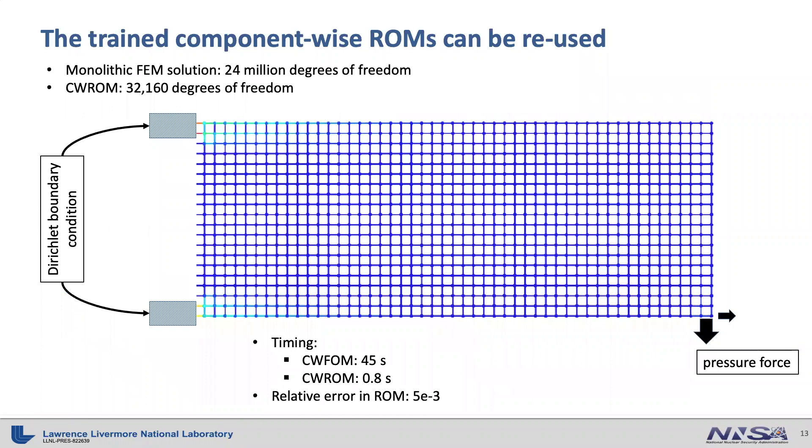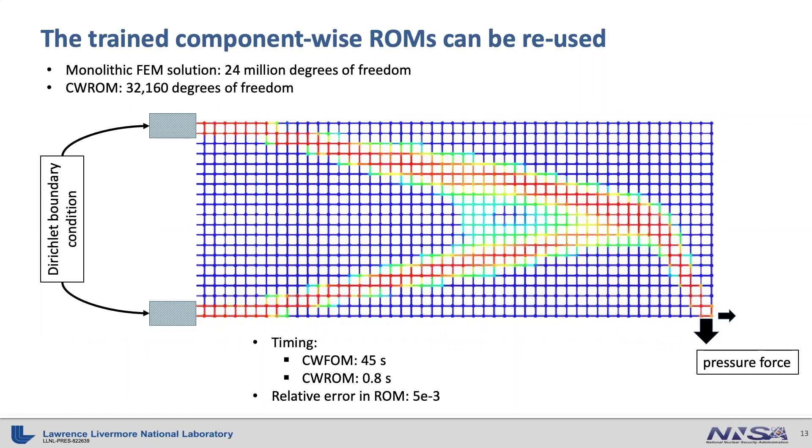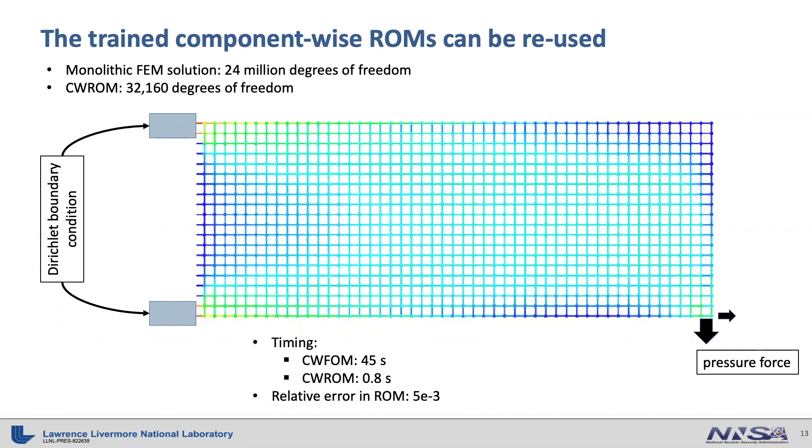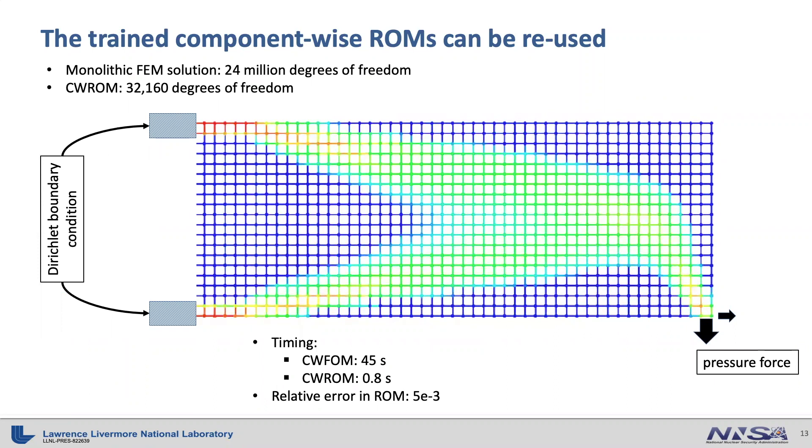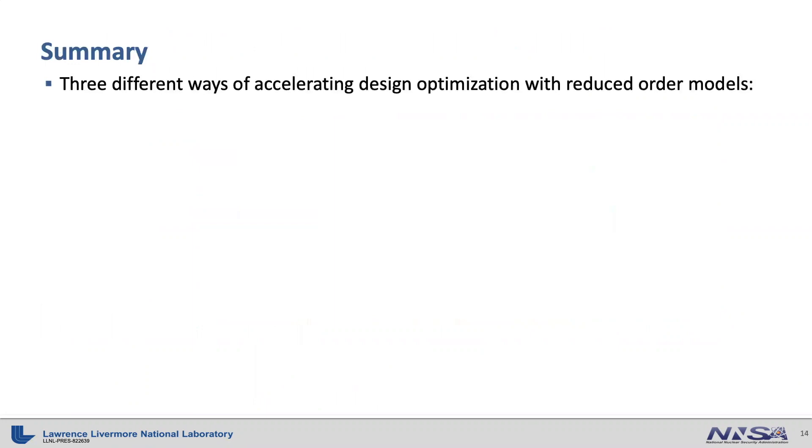Another great advantage of CW ROM component-wise reduced order model is that once the component reduced order models are trained, it can be reused to build a large lattice-type structure, for example, with much more components, as you can see from this movie.